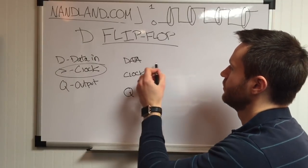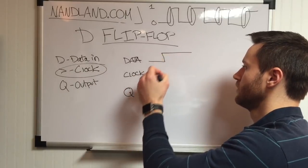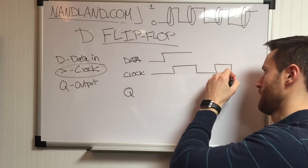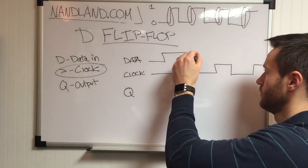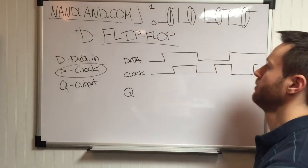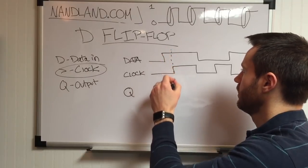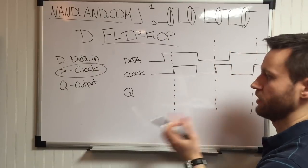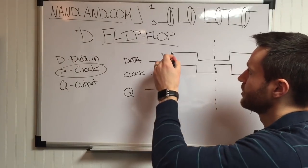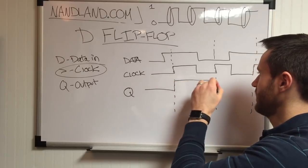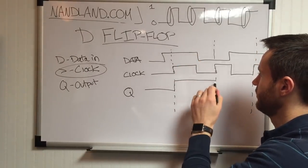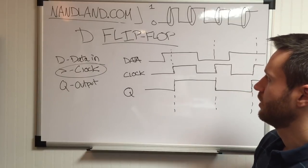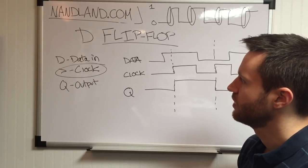Now, what happens if we do something like this? The rising edges of the clock are where we care about what happens to Q. Q starts low, gets to a rising edge, samples D — it's high — so Q goes high. Q stays high even though D goes low in between because Q doesn't see it. Here's another rising edge and Q goes back low. Another rising edge and Q goes back high, and then it stays high. Hopefully this has become a little more clear as to what happens with a D flip-flop.